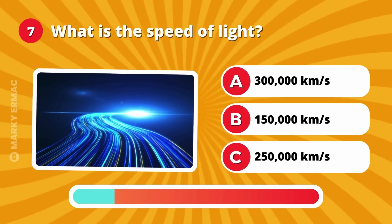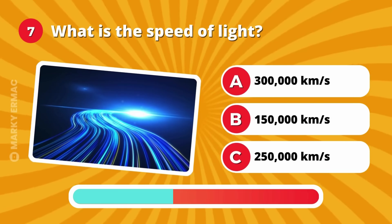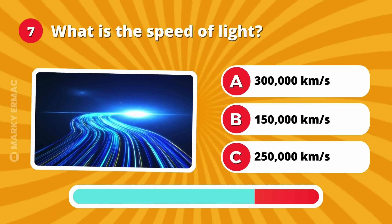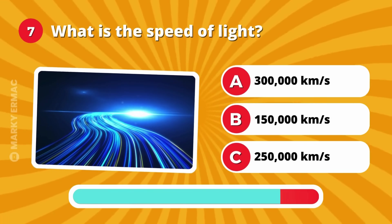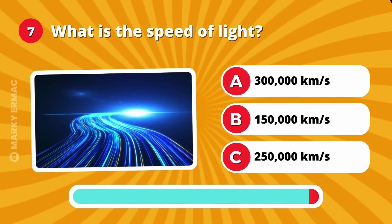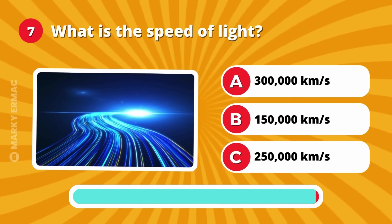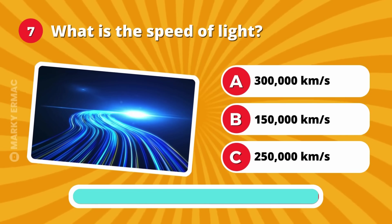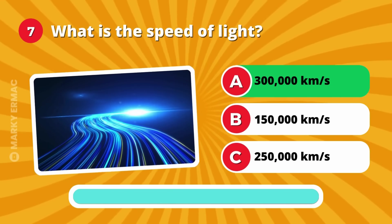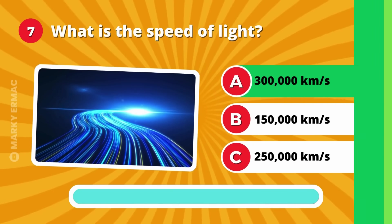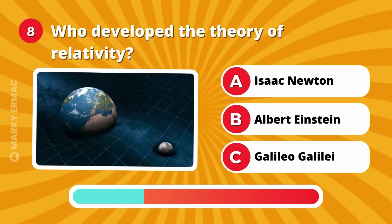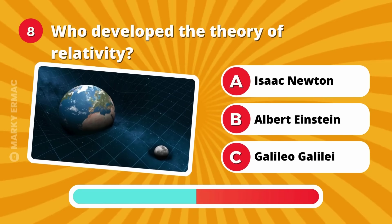What is the speed of light? 300,000 km per second, 150,000 km per second, or 250,000 km per second? It's 300,000 km per second!